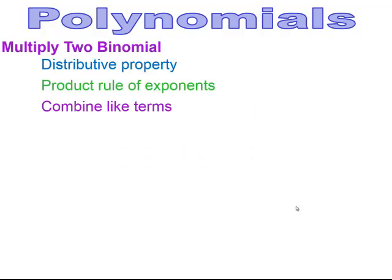Now we multiply a binomial by a binomial, still using the distributive property and the product rule of exponents. In the last step, you may need to combine like terms — it's always important to combine them, otherwise the answer is not in simplest form.